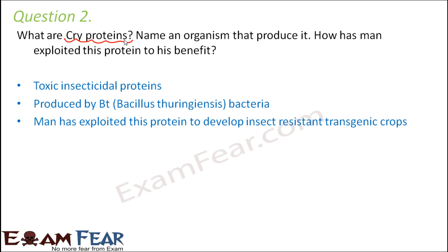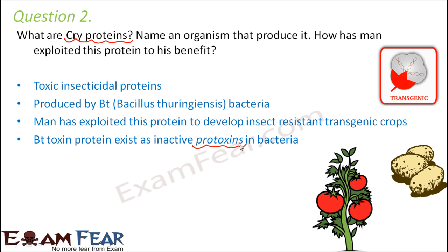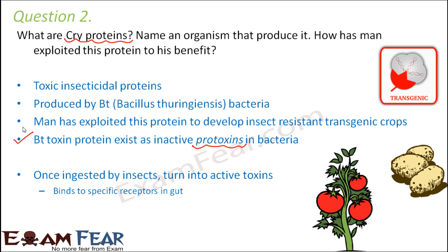Man has exploited cry proteins to develop insect-resistant transgenic crops. If you take this gene and put it inside a plant, the plant gets an inbuilt insecticide and becomes resistant to insects. Crops developed this way include cotton, potato, and tomato. The Bt toxin is present as inactive protoxins in bacteria, but once ingested by insects it turns into an active toxin that binds to and breaks down the digestive tract, causing the gut wall to break down and the insect to die.